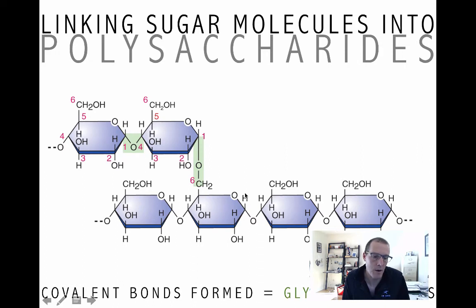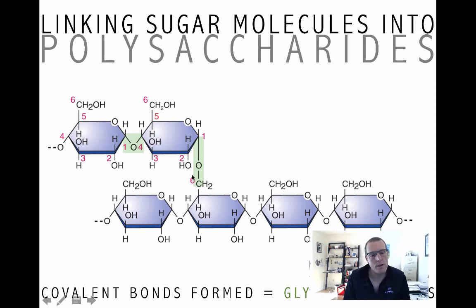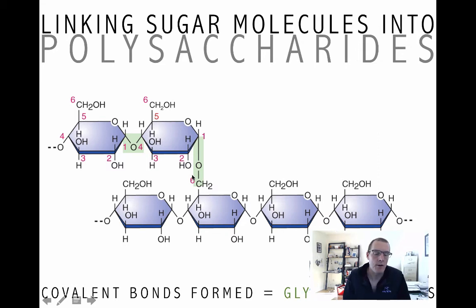There's another glycosidic bond here — this is a 1-6 bond because it's between the 1-carbon of this glucose at the top and the 6-carbon of this glucose at the bottom. So this is called a 1-4 glycosidic bond, and this is a 1-6 glycosidic bond. You don't have to recognize these, except in as much as if I show you two sugars joined together, you should be able to tell me that it's a glycosidic bond.